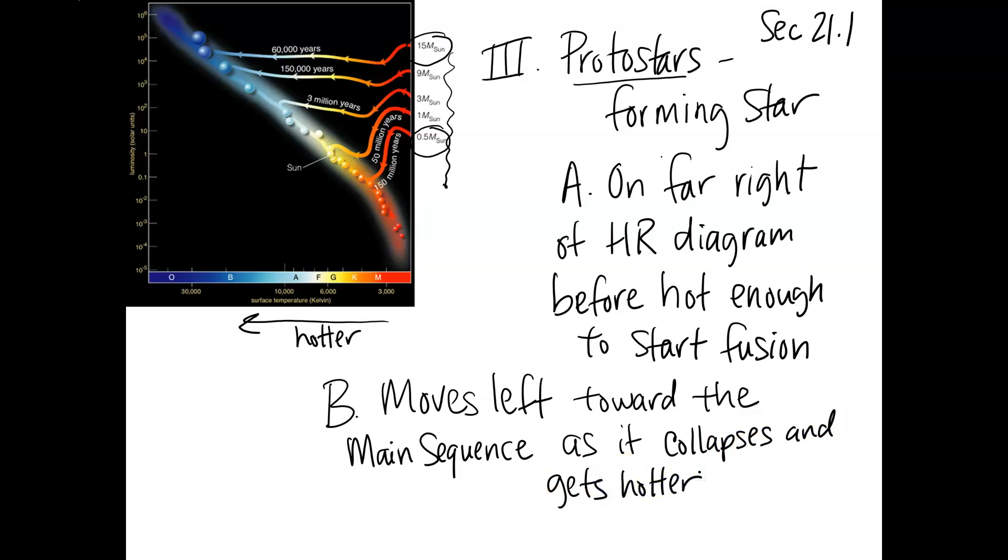So big picture here: we have this big fluffy thing called a protostar. It's getting smaller and it's getting hotter, right? It's collapsing and getting hotter so it moves left on the HR diagram. Let's come back to this mass thing for just a minute and then that's all we're going to say about protostars.